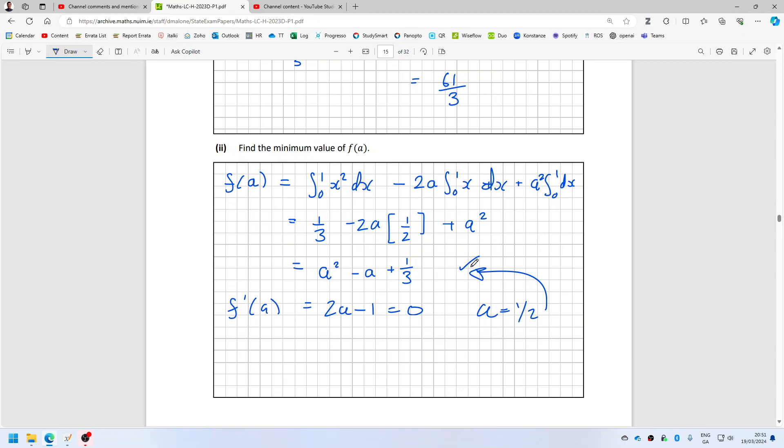So that squared minus that plus one over three. So that means the minimum would be one over 12. And to confirm it's a minimum, the second derivative is two, which is positive.